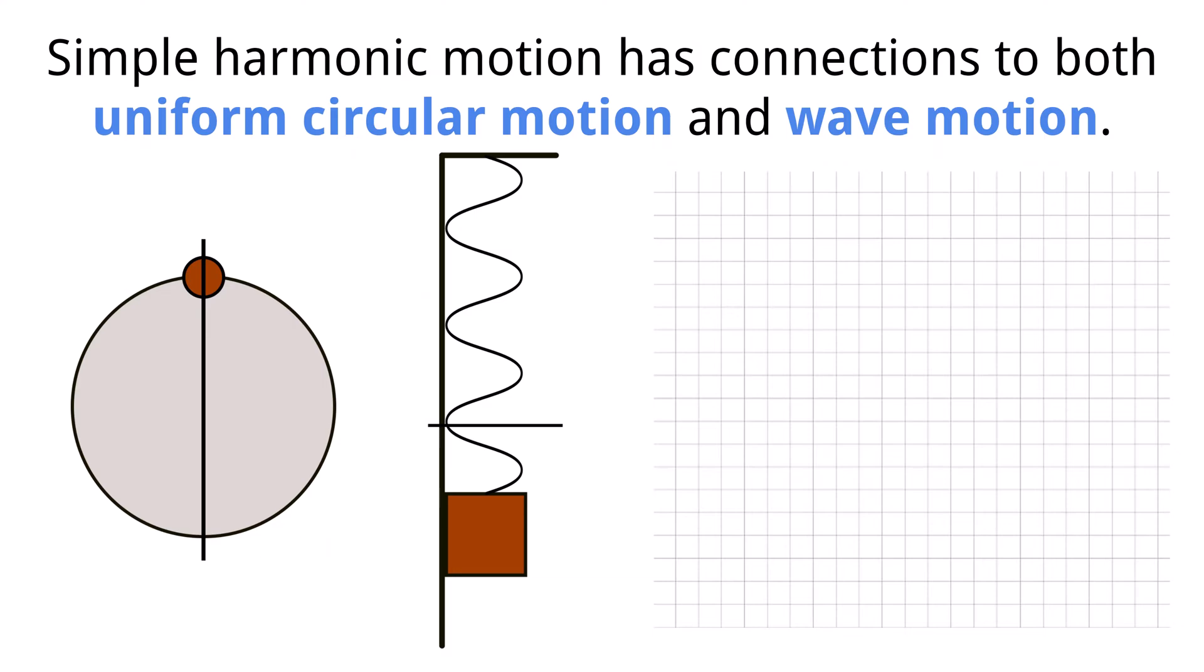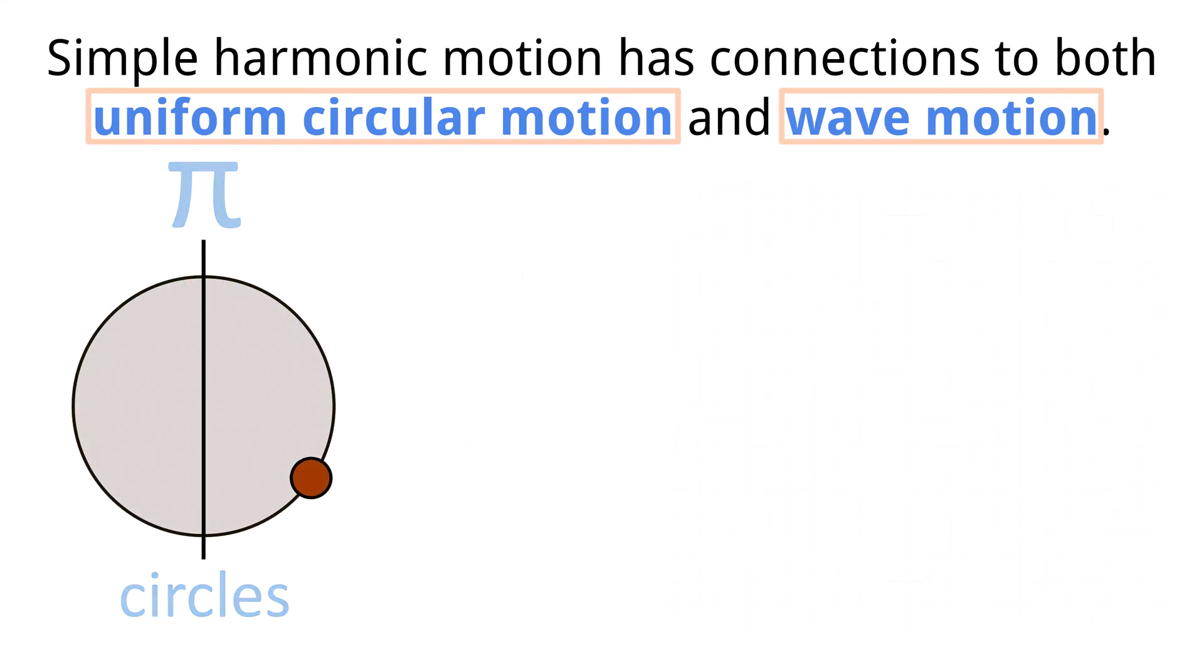Now to discuss some things that you may have noticed earlier in the video but haven't been directly addressed. Simple harmonic motion has connections to both uniform circular motion as well as wave motion. We've seen the term π show up in almost every aspect of this kind of motion so far, and where there is π, there are circles.